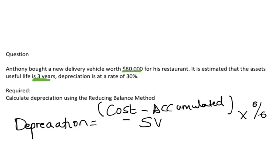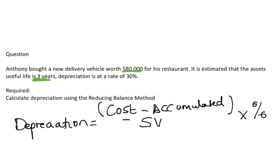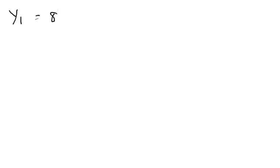Let's start with the first year. We have $80,000. We don't have accumulated depreciation - this is the first year, so it's always going to be the cost: $80,000 multiplied by the percentage, 30%. So you take your calculator: $80,000 multiplied by 30%.